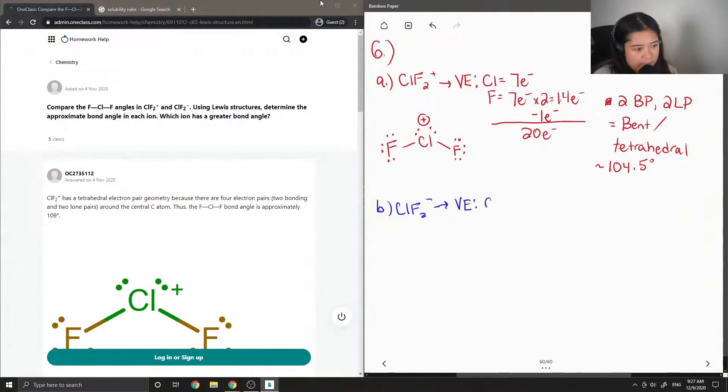For its valence electrons, again, chlorine has seven. Fluorine also has seven, but there are two atoms, so there are 14 in total. And then this time the compound has a negative charge, so we are going to add one electron. So this gives us a total of 22.